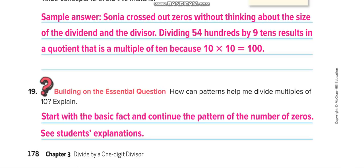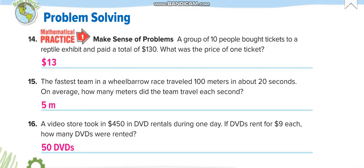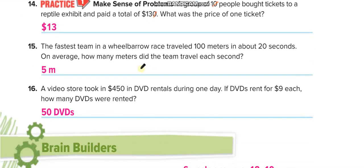Let's move to the next page. A group of 10 people bought tickets to a reptile exhibit and paid a total of $130. So we divide 130 by 10 — cancel this zero with that zero — and 13 divided by 1 is 13. Each ticket costs $13.